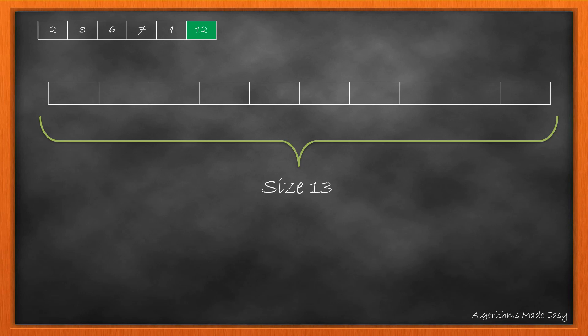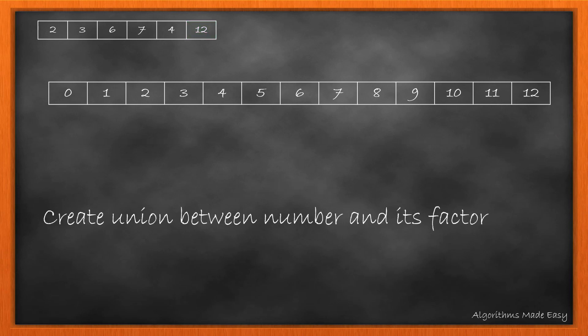The data structure has an array where all the relationships are stored. We'll find the maximum number and have the array of size equal to the number plus 1. In this case, as maximum number is 12, the size of the array is 13. Initially, all the values will be equal to their indexes. Now comes the part to create the union between the numbers and their factors.